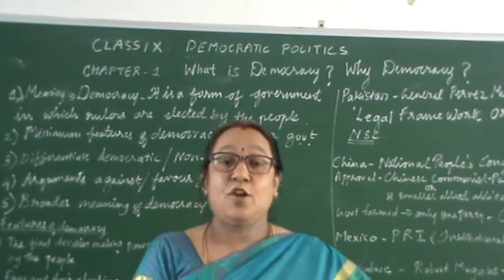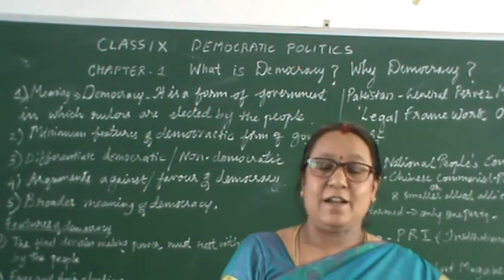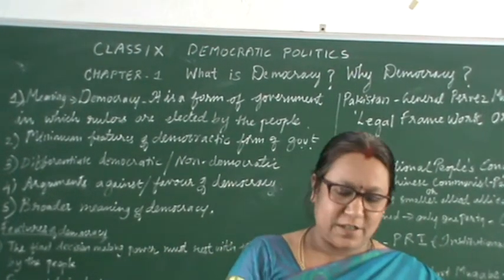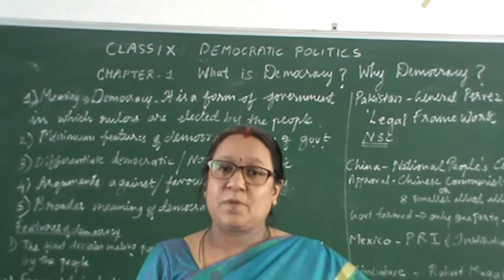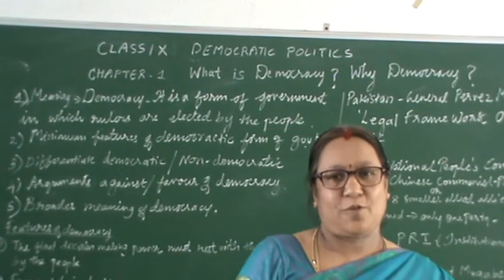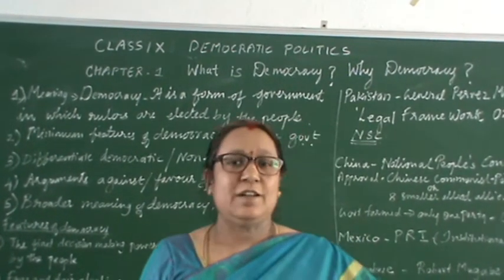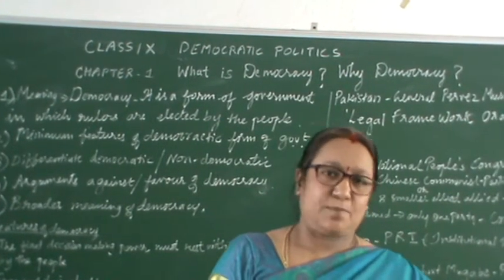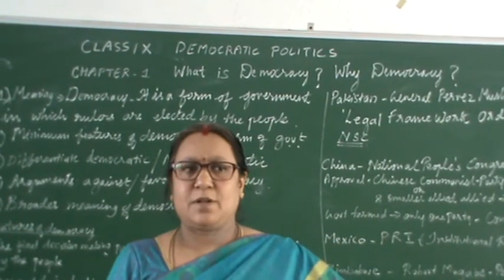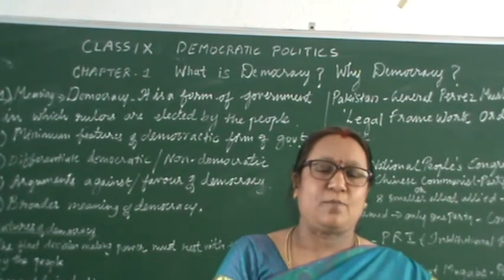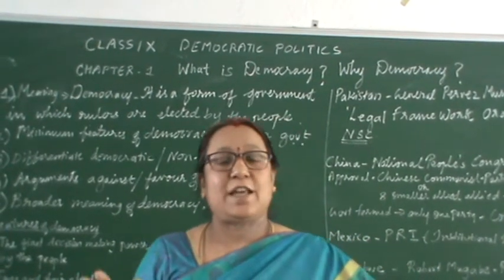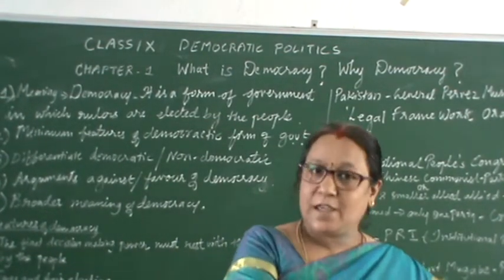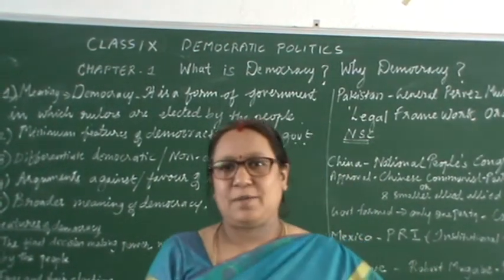Even in Nepal, our neighbouring country, for 240 years they had an absolute monarchy — a monarchical form of government. Only in the year 2008 did Nepal switch to a democratic form of government, because people wanted democracy. Today it has a president as head of state and a prime minister as head of government. In a monarchical form of government, the people don't elect the ruler — he comes to power because he is born in a royal family.